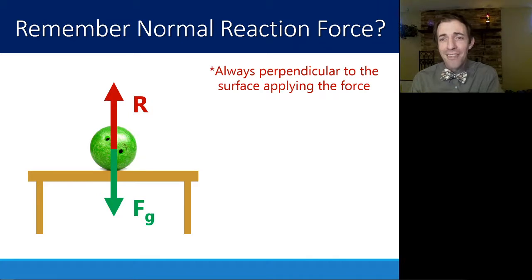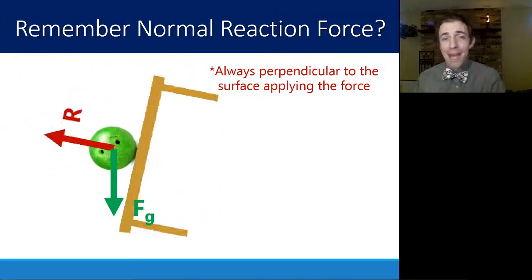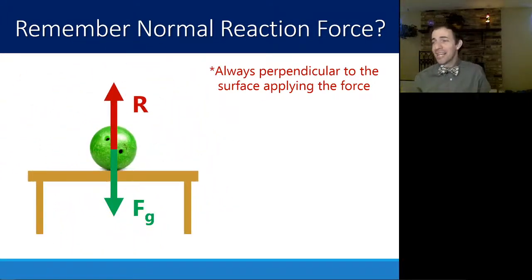I will point out that in that animation, one thing that's not true is that these vectors probably wouldn't stay the same length. The magnitude would probably change. Here in this model, I'm just showing that the direction changes according to the slope, not getting into the magnitude changing there.